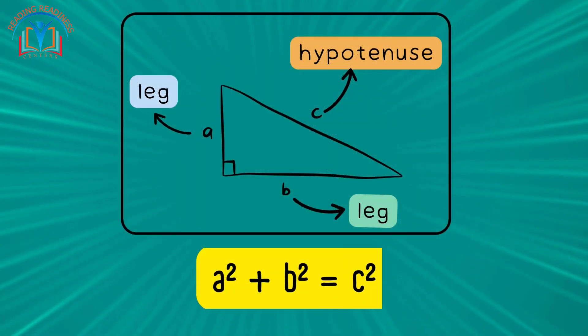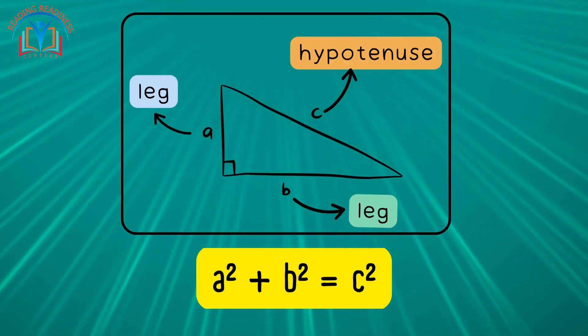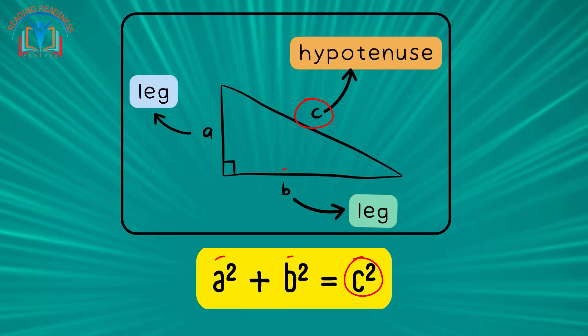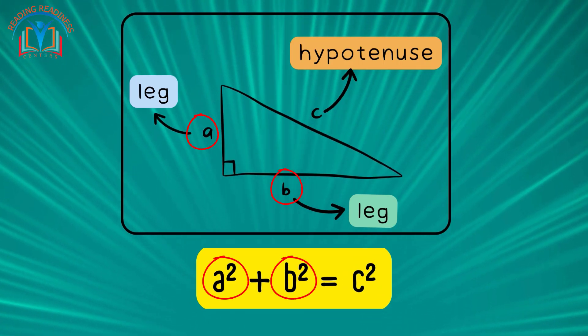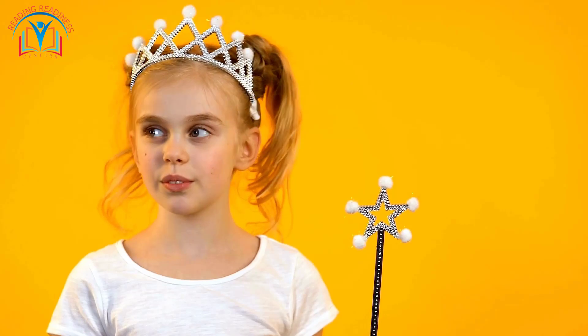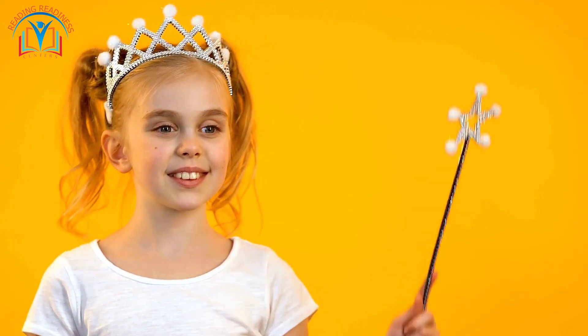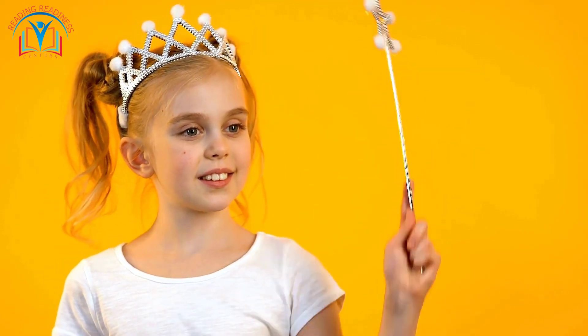Now, onto the marvel that is Pythagoras Theorem itself. The Pythagorean Theorem states that, in a right triangle, the square of the hypotenuse is equal to the sum of the squares of the legs. In simpler terms, it's like a mathematical magic wand that helps us unlock the secrets of right-angled triangles.